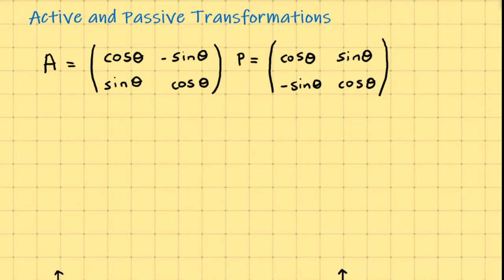What you should remember, though, is that AP, the two transformations compounded, is the same thing as PA, which is the identity matrix.